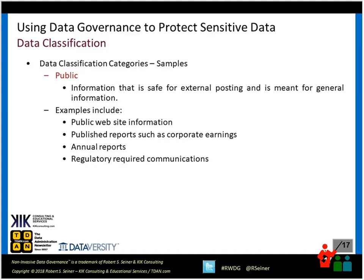Public data is information that's safe to be posted externally, meant for general information — things made available through your organization's public website, issued reports, annual reports, and regulatory requirements. There are five examples of categories you can slot your data into, and the handling rules will differ depending on how you've categorized the data, from the highest level of protection to the lowest.